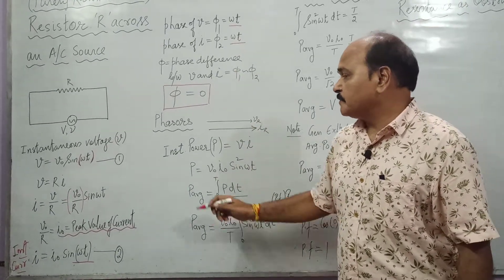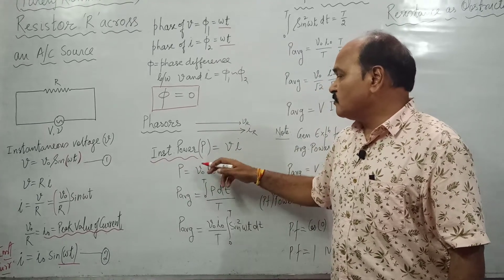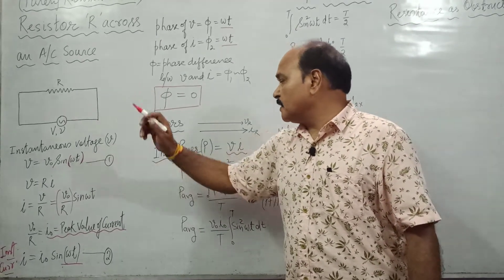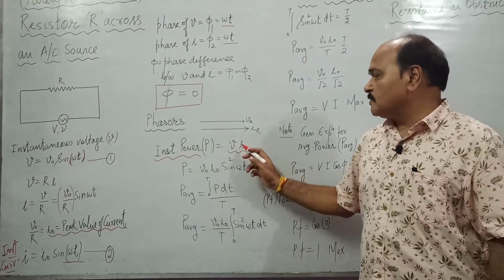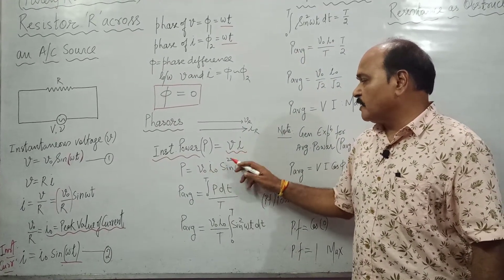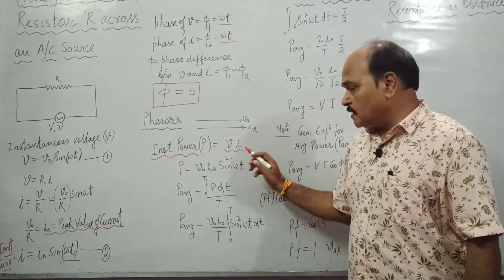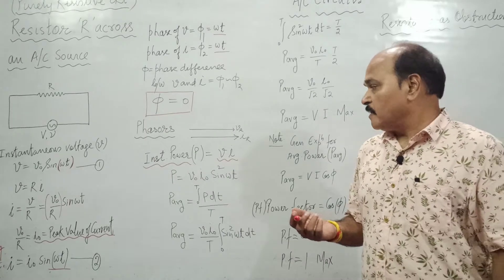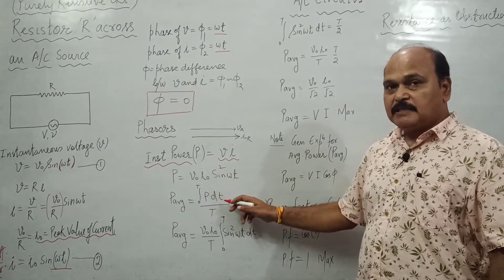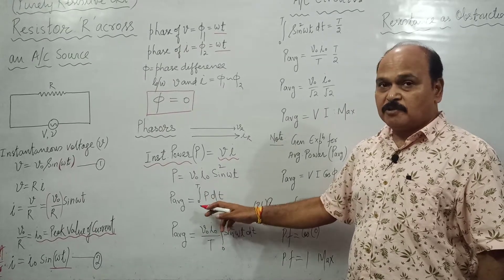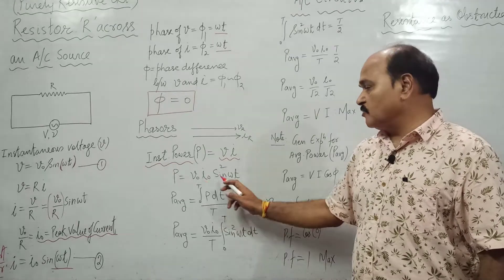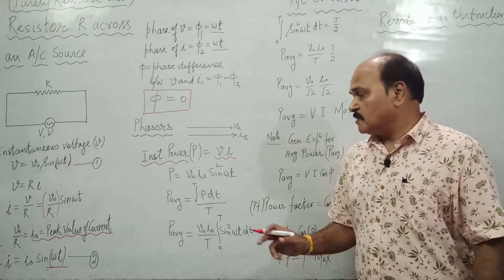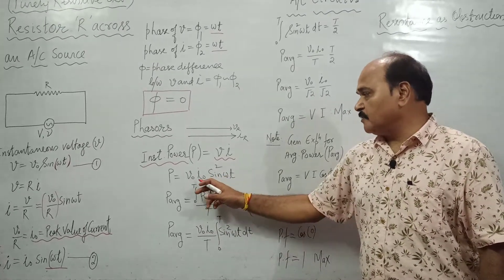What is the instantaneous value of power? Instantaneous power is the product of instantaneous voltage and current: p = V₀ sin(ωt) × I₀ sin(ωt) = V₀I₀ sin²(ωt). For the average value of power, we use the master formula: integrate p·dt from 0 to T and divide by T. Substituting, average power = (V₀I₀/T) × integral of sin²(ωt)dt from 0 to T.